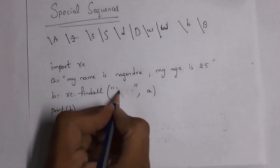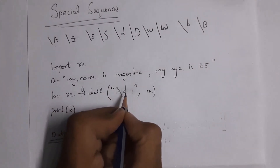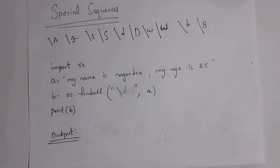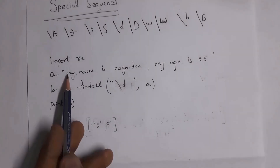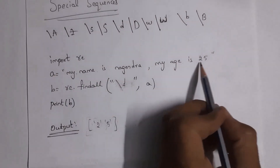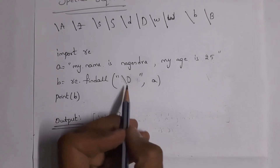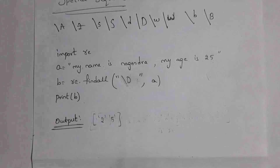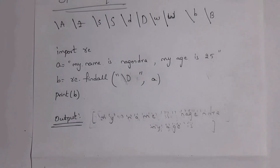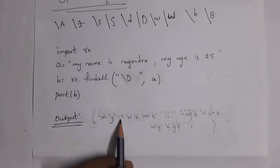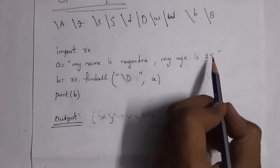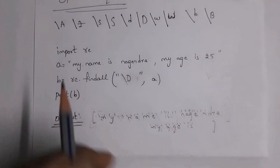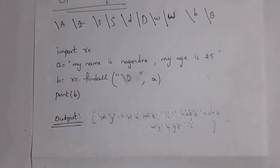Next I'll explain `\d` (backslash small d), where 'd' stands for digits. It displays only digits from the given sentence. In 'my name is nagendra, my age is 25' there are two digits — 2 and 5 — so the output is `['2', '5']`. `\D` (capital D) is opposite: it prints all characters except digits, so it prints everything except '2' and '5', each character in single quotations.